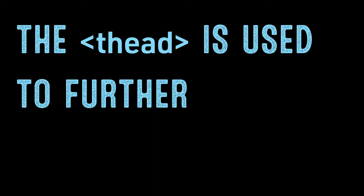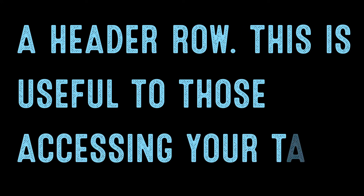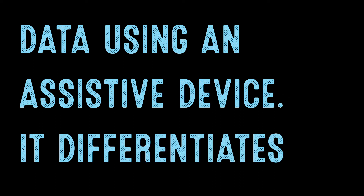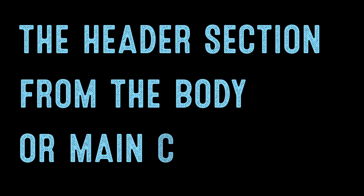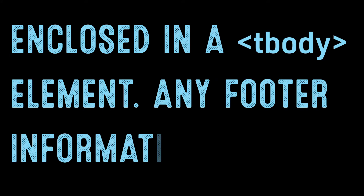The table head element is used to further identify that first row as a header row. This is useful to those accessing your table data using an assistive device. It differentiates the header section from the body or main content enclosed in a table body element.